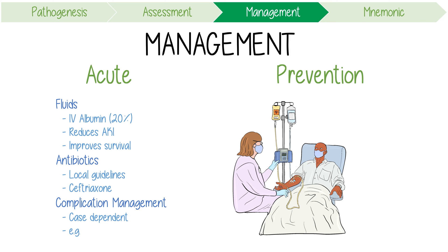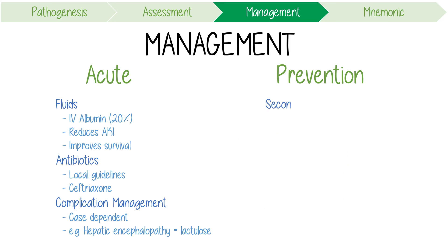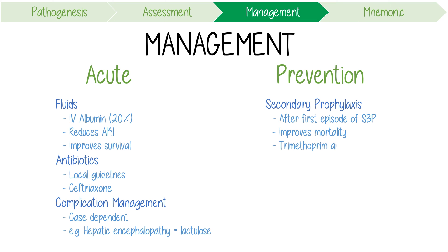Complication management is case dependent. For example, if a patient presents with hepatic encephalopathy, consider using oral lactulose to help reduce the absorption of toxic amines by lowering the colonic pH. Secondary prophylaxis should be considered after the first episode of spontaneous bacterial peritonitis, as this reduces the risk of subsequent episodes and improves mortality. Consider daily trimethoprim and sulfamethoxazole.